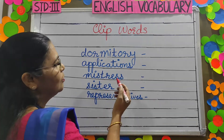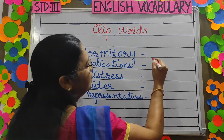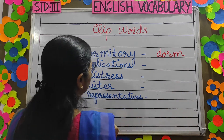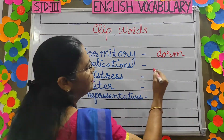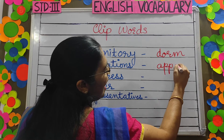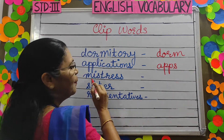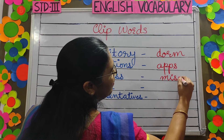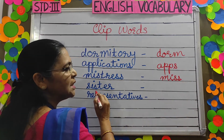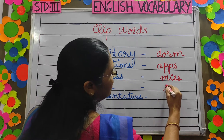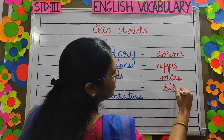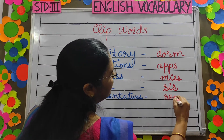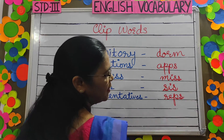Dormitory — the clip word is dorm. Applications — the clip word is apps. Mistress — the clip word is Miss. Sister — the clip word is Sis. Representatives — the clip word is Reps.